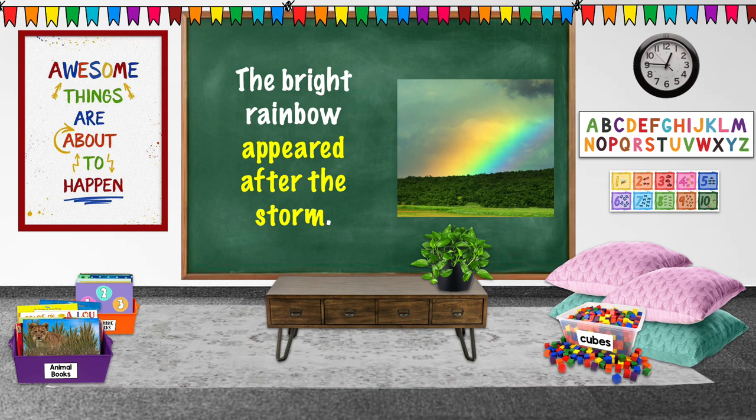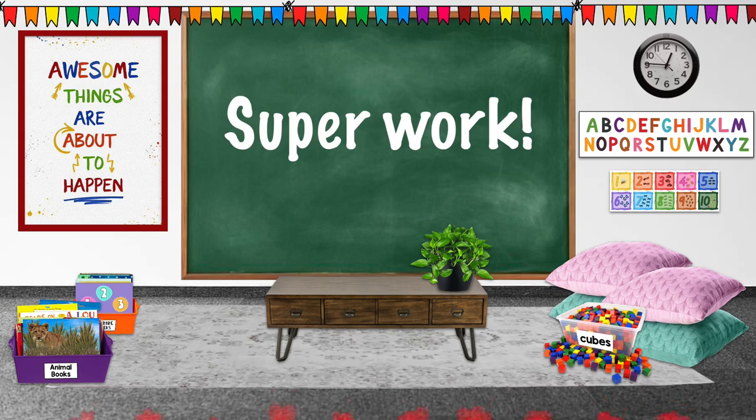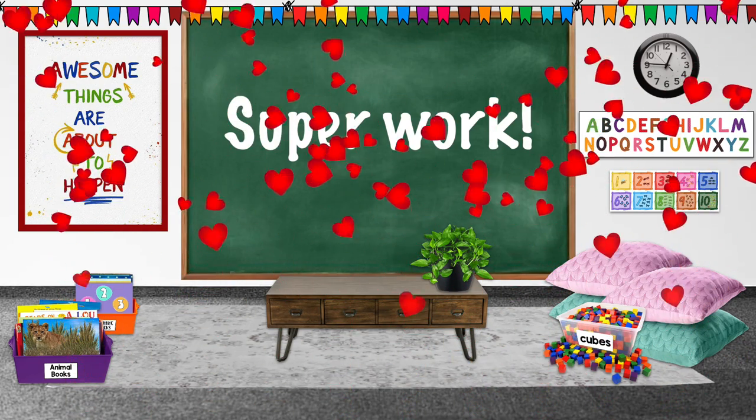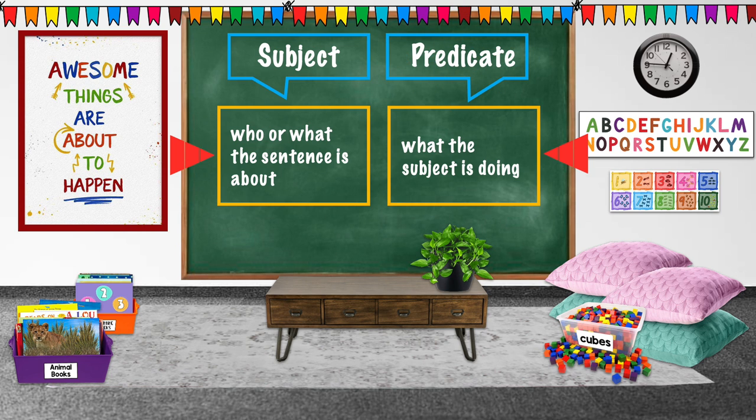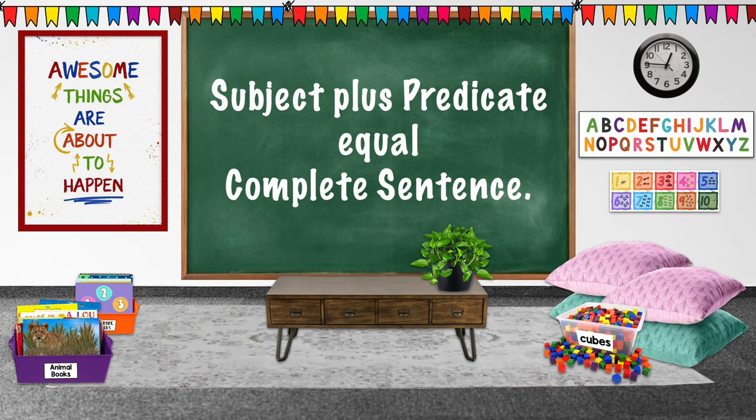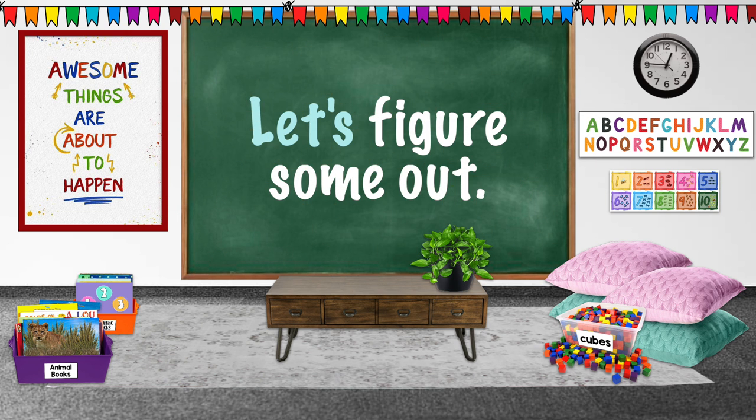What did it do? Appeared after the storm. That's our predicate. Super work! Listen, the subject tells us who or what the sentence is about, and the predicate tells us what they're doing. Together they make a complete sentence.